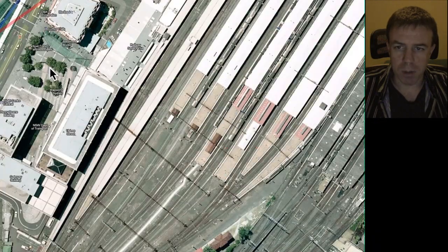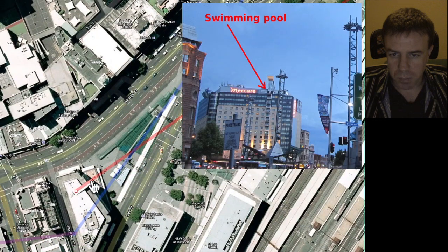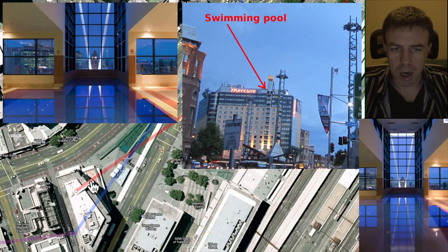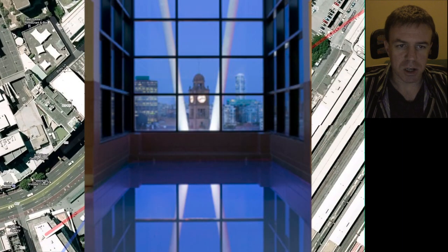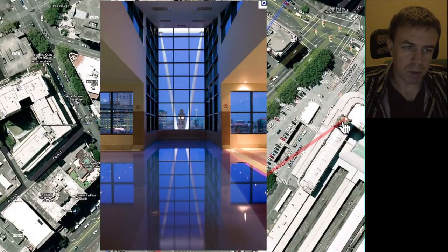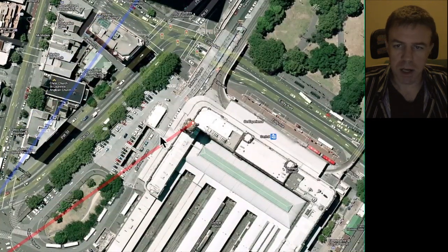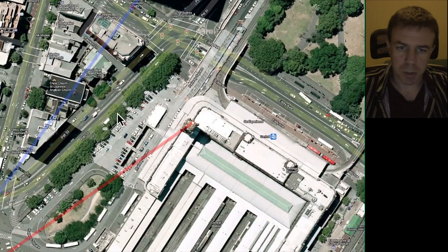Now from the Mercure Hotel we have a swimming pool just here, and as you look across the swimming pool you can see that it has definitely been architecturally designed to line up with the clock tower of the central railway station, which is right here. I think that's pretty plain to see.